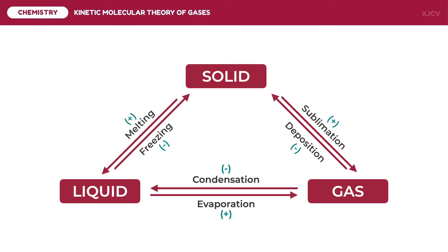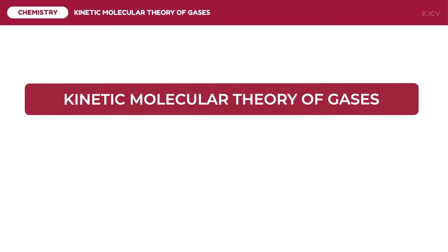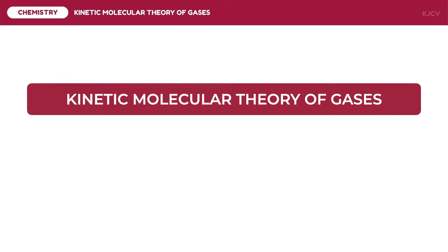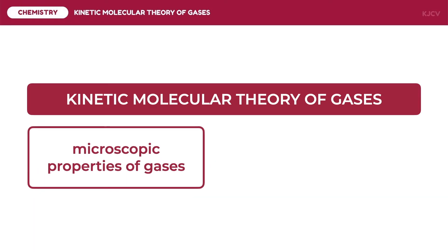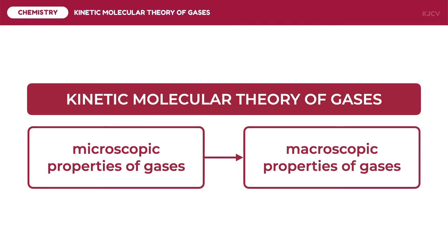With this information on the kinetic molecular theory of matter, we can now discuss the kinetic molecular theory of gases. The kinetic molecular theory of gases describes how the microscopic properties of the gas particles dictate the macroscopic properties of gases, as we compare them with the properties of solid and liquid particles. The kinetic molecular theory of gases contains several assumptions or postulates that will be used to describe the macroscopic properties of gases.